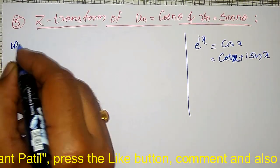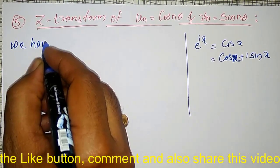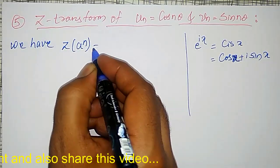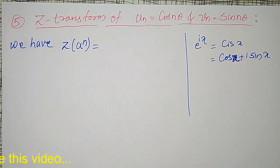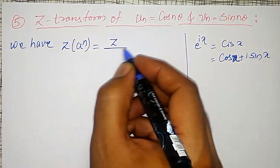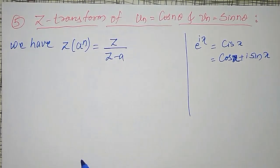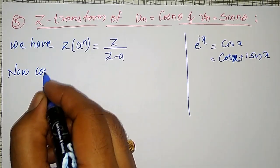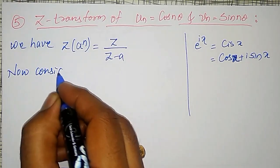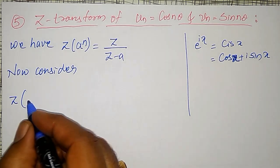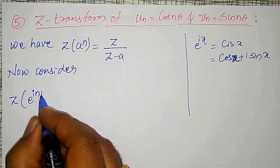Before that, we know that we have the Z transform of a raised to n. In my previous video, I have derived this Z transform of a raised to n as Z divided by Z minus a. Now consider the Z transform of e raised to inθ.